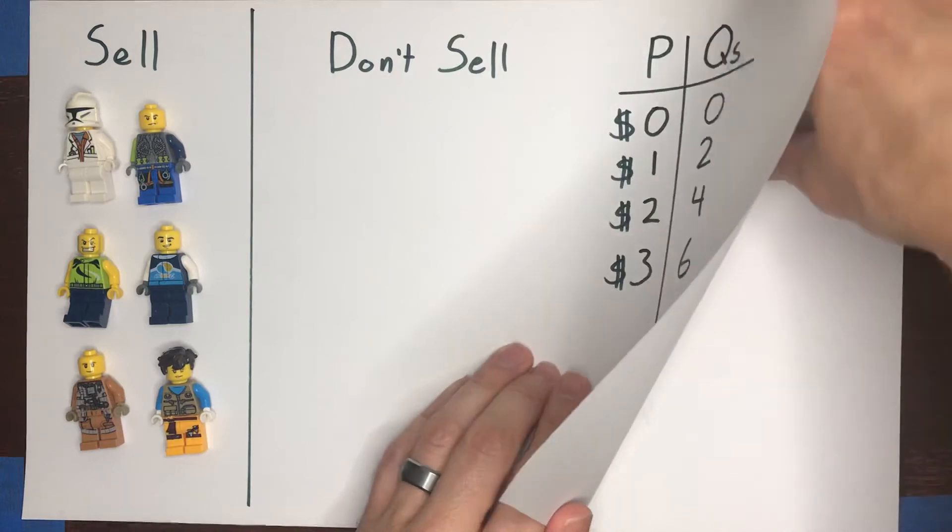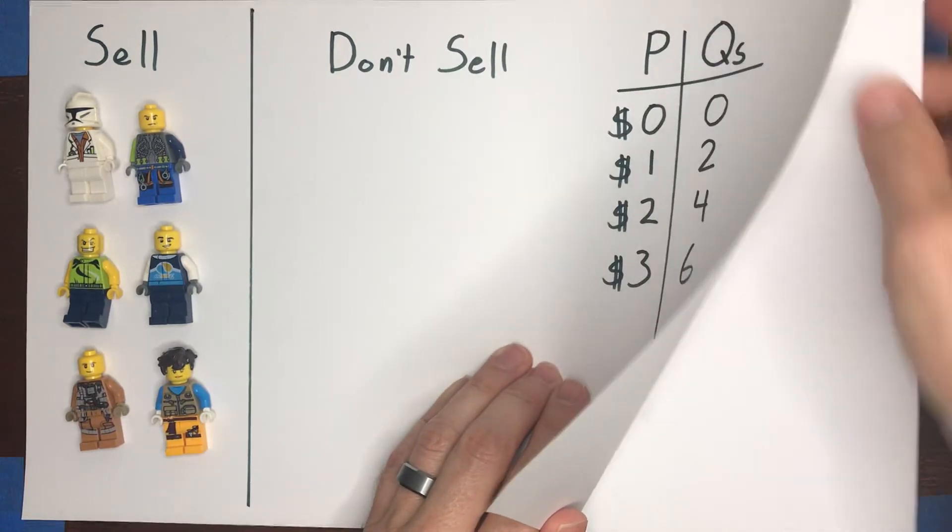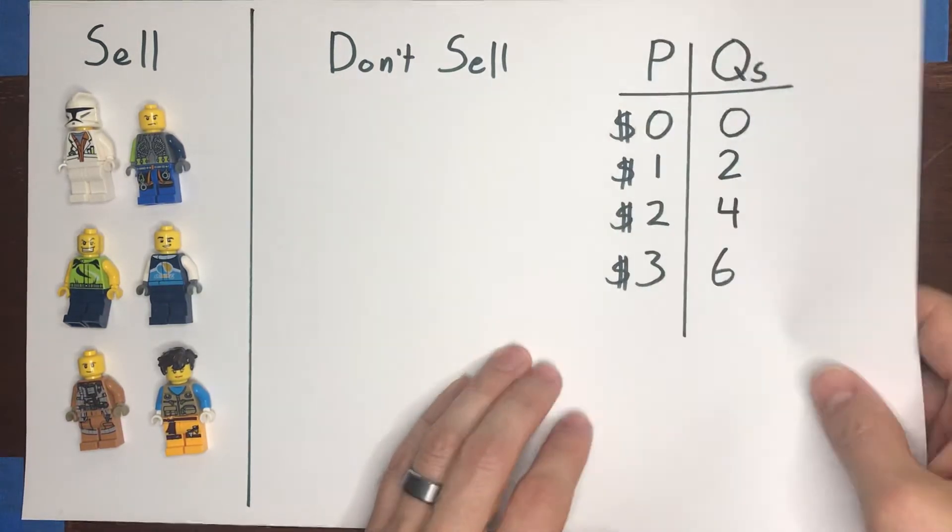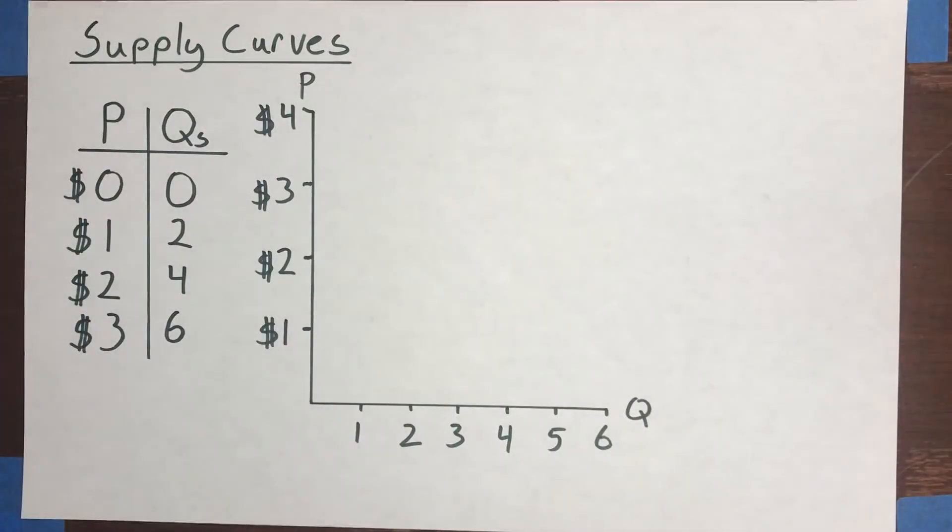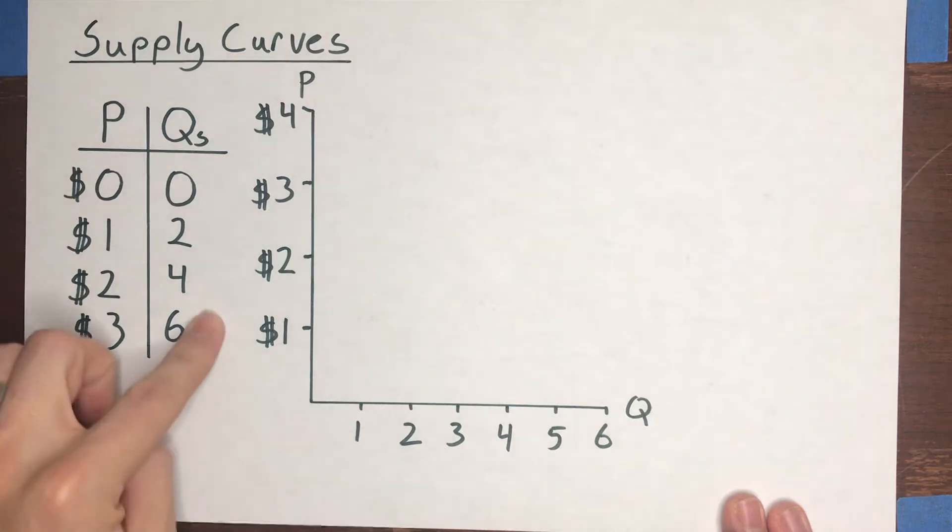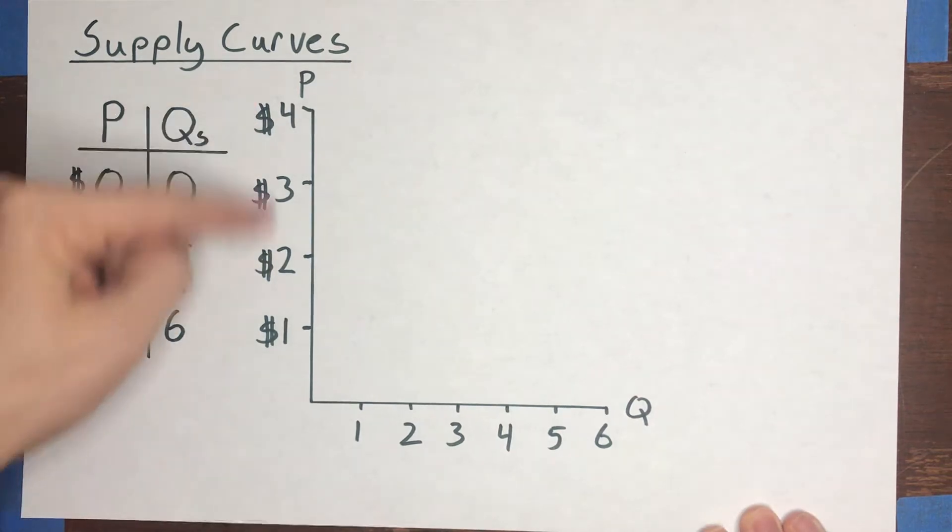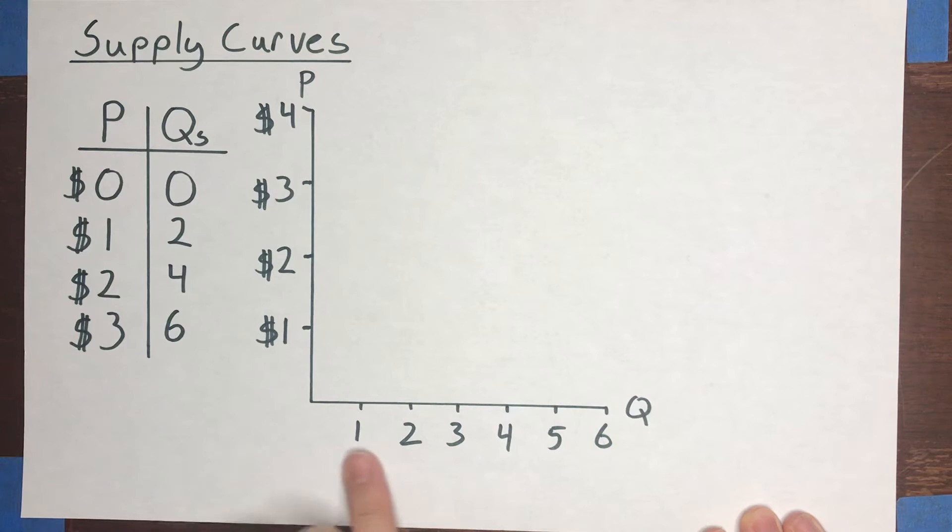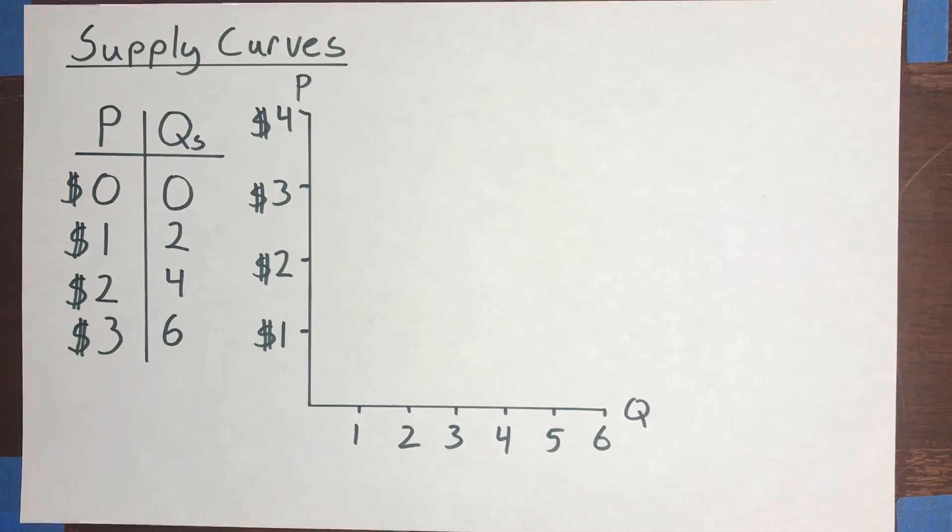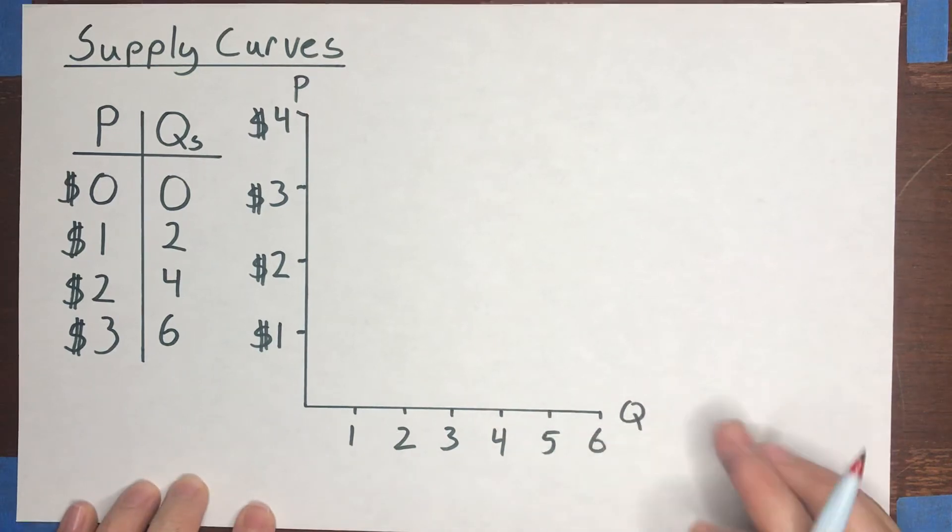And just like with demand we can take that table and graph it out to get a supply curve. So here we have that same table reproduced. Now we've got a graph with price on the y-axis and the quantity of units on the x-axis. Prices ranging from one to four dollars and quantities supplied ranging from one unit to six units. So we take our table and we just plot those points on the graph.